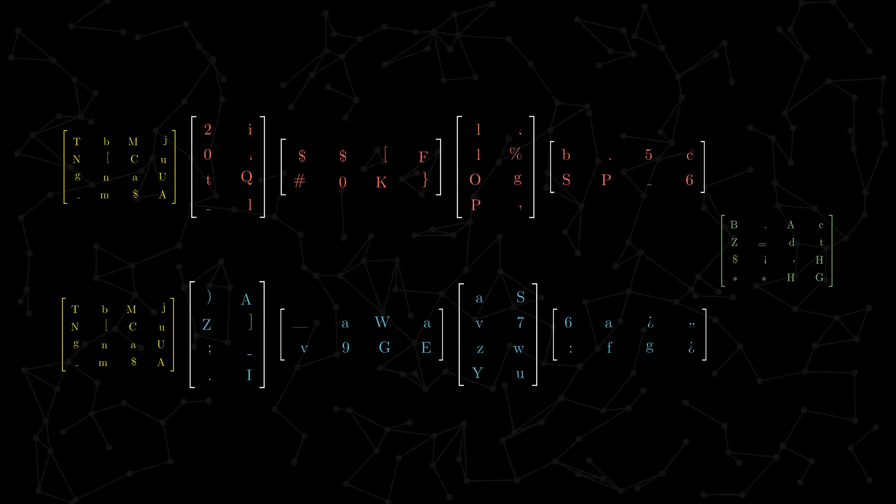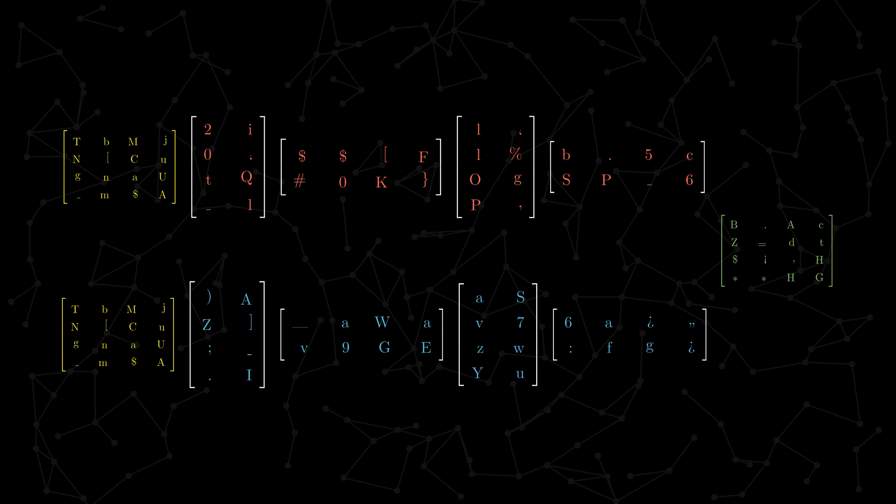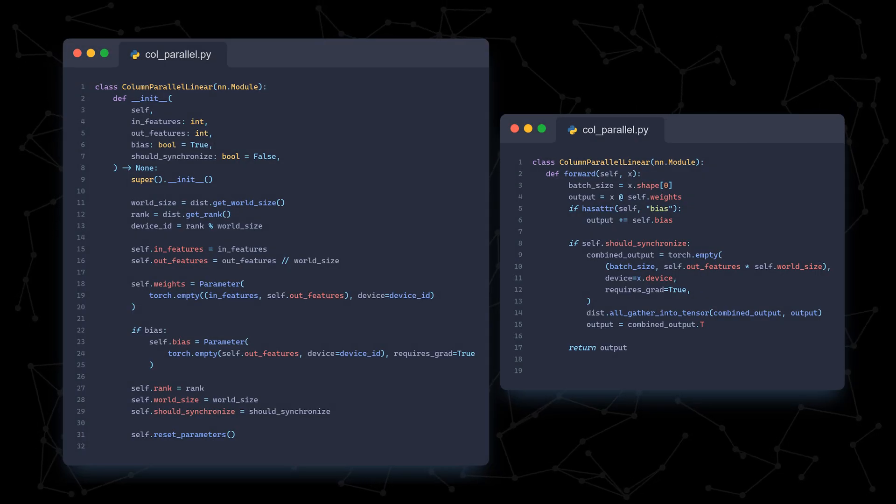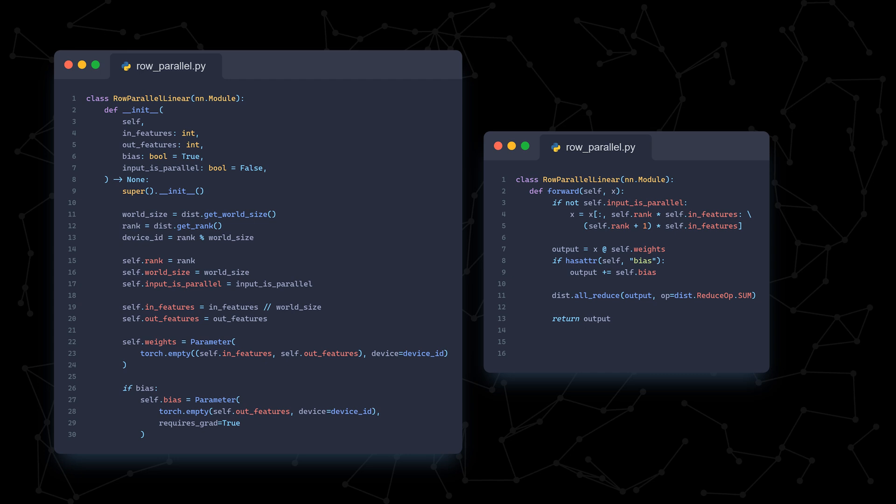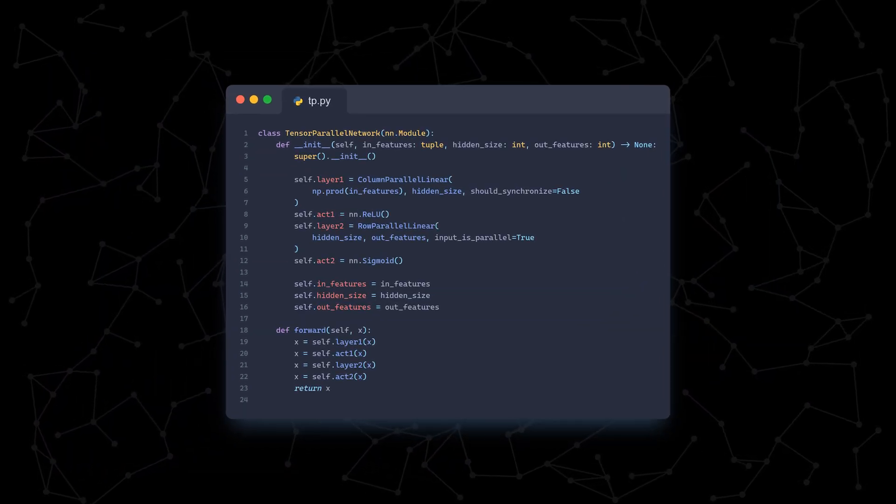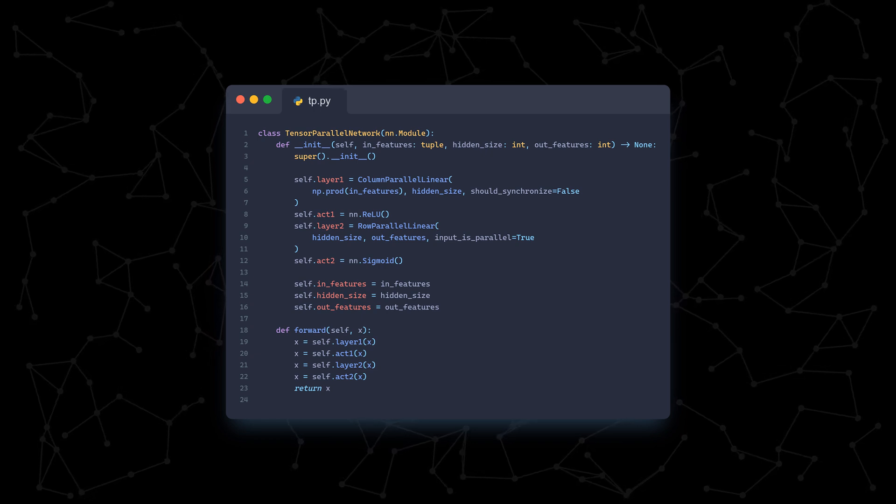The fact that our model can remain in this split state without adding much communication overhead is a huge boon for training times. Here are the classes for simple column parallel and row parallel implementations, along with a class that uses both for consecutive sets of matrix multiplications. I won't dive deeper into them, but I encourage you to read the code and see how it visually matches the animations.